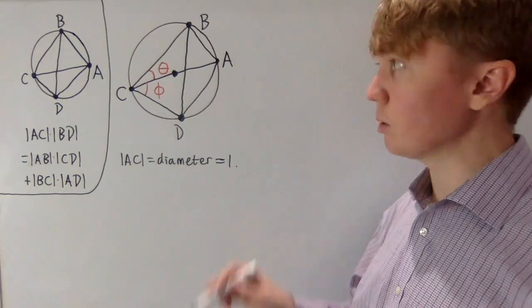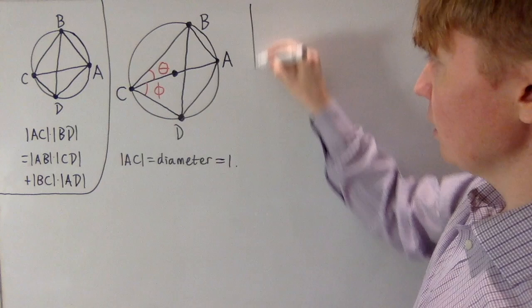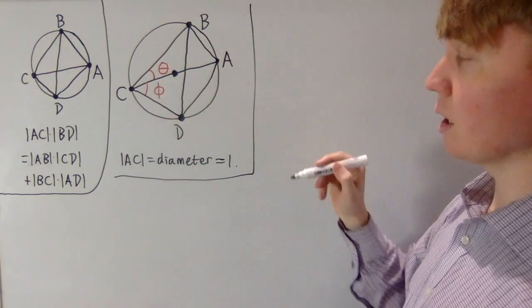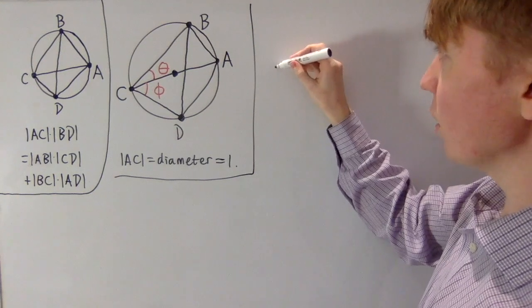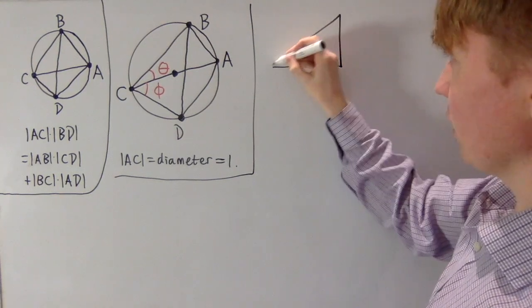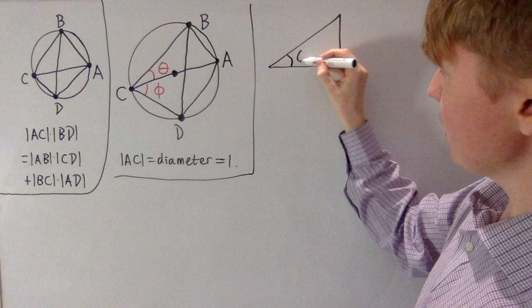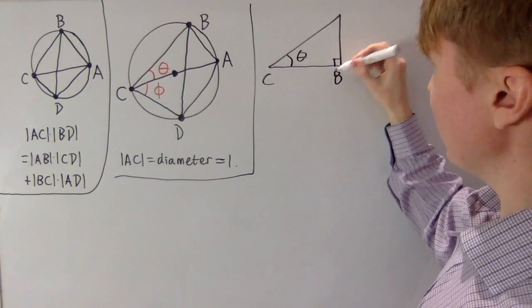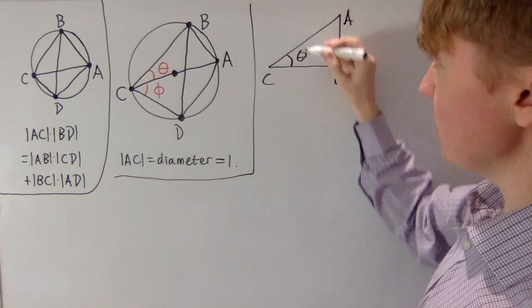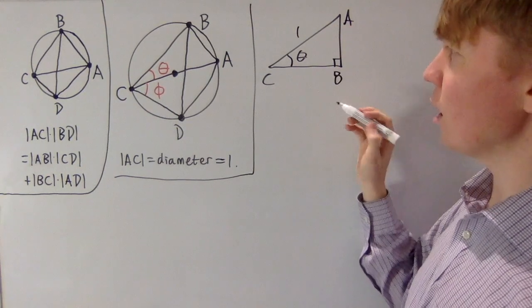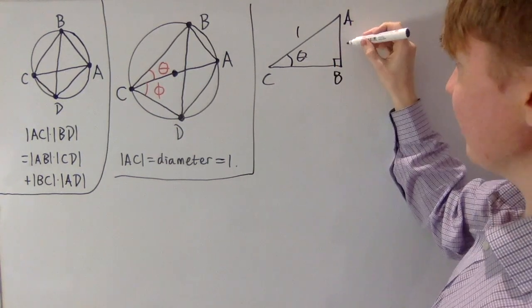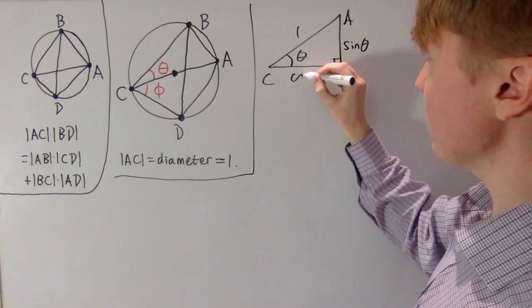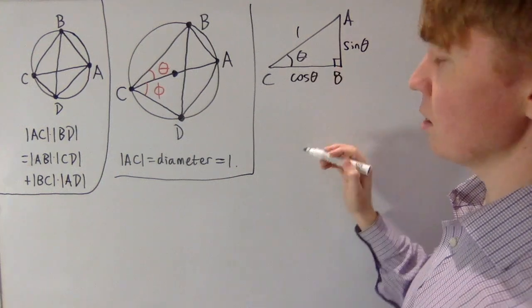Triangle ABC is a right-angled triangle where we know one of the angles and the hypotenuse has length 1. Copying out this triangle with vertices C, B (right angle), and A, if we've got theta here, then the length of AB is sine theta and the length of BC is cos theta.